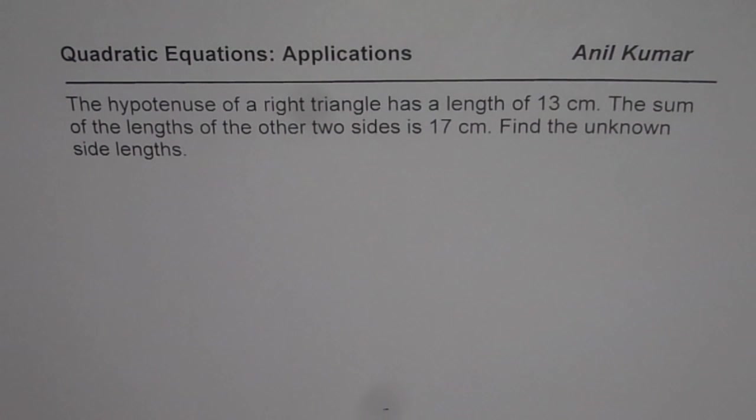The hypotenuse of a right triangle has a length of 13 centimeters. The sum of the lengths of the other two sides is 17 centimeters. Find the unknown side lengths.